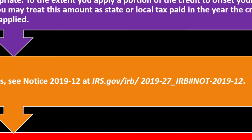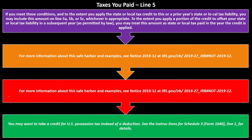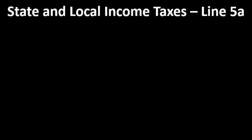You can look up Notice 2019-12 on the IRS website — it's a somewhat unusual situation you likely won't see all the time. Also, you may want to take a credit for U.S. possession tax instead of a deduction. Look into which would be more beneficial — the credit or the deduction — by checking the instructions for Schedule 3, Form 1040, Line 1 on the IRS website.